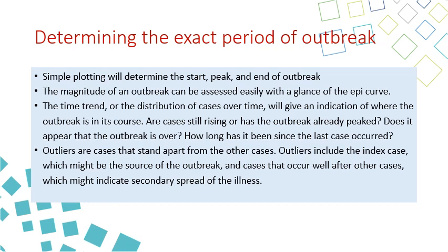You can determine whether it is a small outbreak of five or six patients, or a large outbreak of hundreds. The time trend — the distribution of cases over time — gives you an indication of where the outbreak is in its course. If you are drawing the outbreak and haven't reached the peak yet, you know the outbreak is still ongoing. There is an upward slope, then a downward slope. After the curve goes down and you are approaching the end, you may still find outlier cases detected after the main outbreak ends.